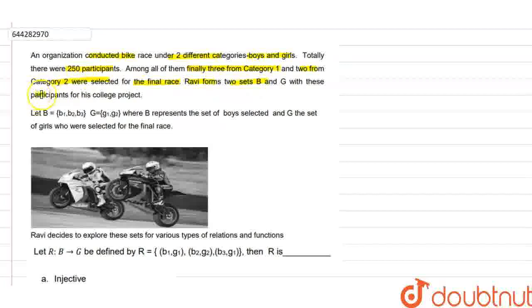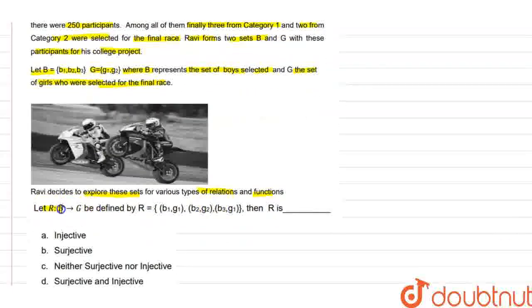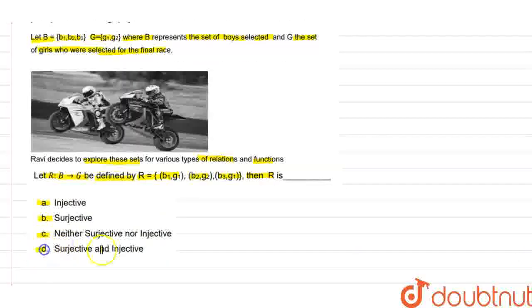An organization conducted a race under two categories with 250 participants. Among them, those from Category 1 and Category 2 were selected for the final race. Let B represent the set of boys selected: B = {b1, b2, b3}, and G represent the set of girls selected: G = {g1, g2}. Ravi decides to explore these sets for various types of relations and functions. Let R be a relation from B to G defined by R = {(b1,g1), (b2,g2), (b3,g1)}. Then R is: (a) Injective, (b) Surjective, (c) Neither surjective nor injective, or (d) Surjective and injective.